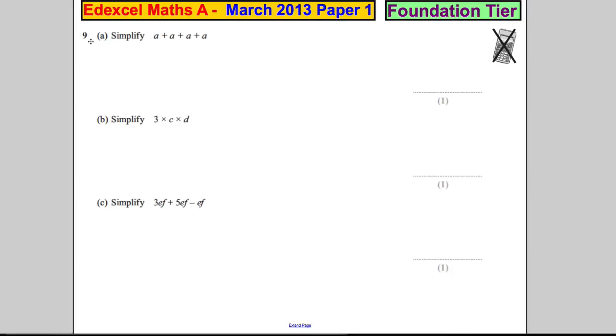We've got some algebra in Question 9. We're asked to simplify a + a + a + a. That means write it in a neater algebraic way. We've got 1a, add another a is 2a, add another a is 3a, add another a is 4a. So we've got 4a - that means 4 times a, a added together 4 times.